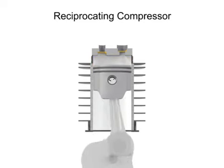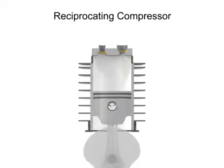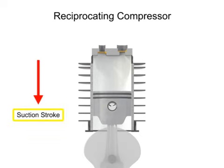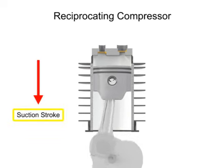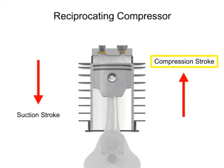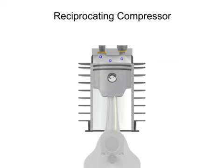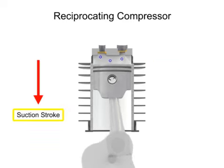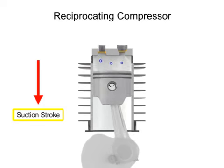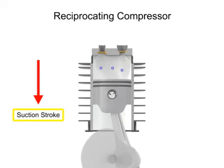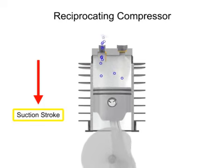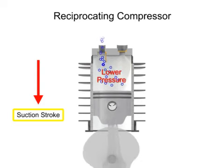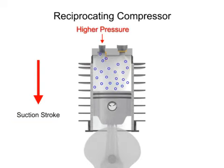The downward stroke of the piston is called the suction stroke, and the upward stroke is called the compression stroke. As the piston moves downward on its suction stroke, the volume increases within the cylinder. As the volume increases, the pressure within the cylinder becomes lower than the inlet air pressure, allowing the higher pressure outside air to push open the inlet valve and allow more air into the cylinder.